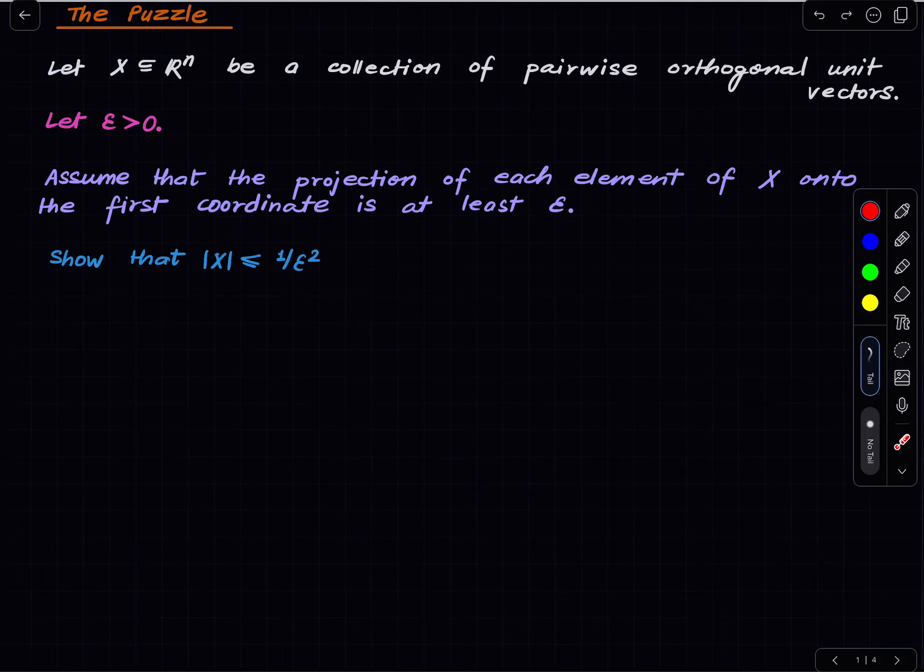But there is something more we can say by this extra knowledge that the projection of every element of X onto the first coordinate is at least of magnitude epsilon. Okay so as usual you're encouraged to pause the video and try to find a proof for yourself before we look at what I'm going to discuss.